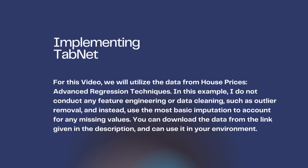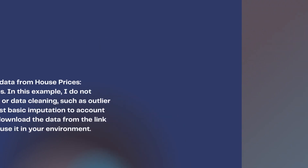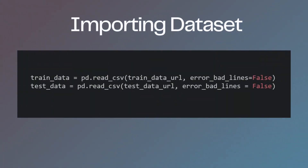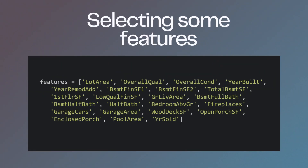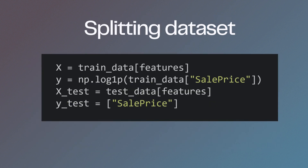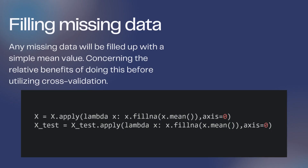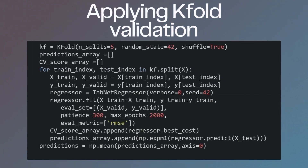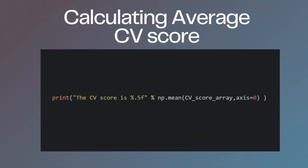Implementing TabNet: for this video, we will utilize the data from house prices advanced regression techniques. In this example, no feature engineering or data cleaning such as outlier removal is conducted; instead, the most basic imputation is used to account for any missing values. You can download the data from the link given in the description. The implementation covers: installing and importing libraries, dataset URL, importing the dataset, selecting some features, splitting the dataset, filling missing data with a simple mean value, converting data to NumPy, applying K-Fold validation, and calculating the average CV score.